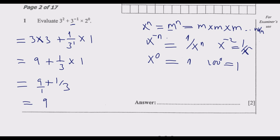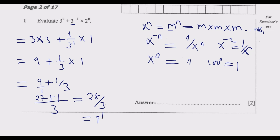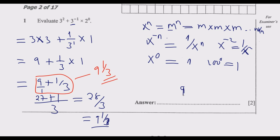At this point we just add: 9 plus 1 over 3. The common denominator is 3, so 3 times 9 is 27, then plus 1, giving us 28 over 3. Dividing that out gives 9 and 1 third. Write your answer neatly in your paper and you get the 2 marks.